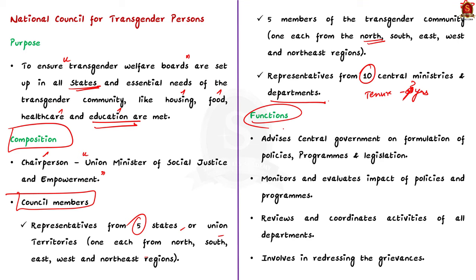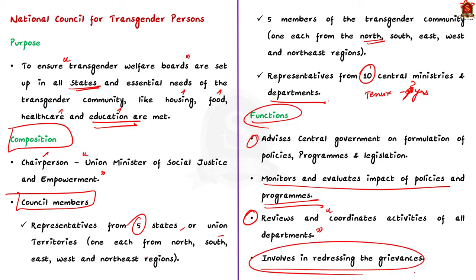The functions of the NCTP include: first, advising the central government on the formulation of policies, programs, legislation, and projects with respect to transgender persons; second, monitoring and evaluating the impact of policies and programs designed for achieving equality and full participation of transgender persons; third, reviewing and coordinating the activities of all relevant departments; and fourth, redressing the grievances of transgender persons.